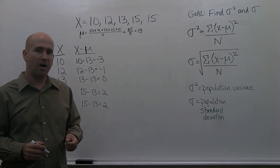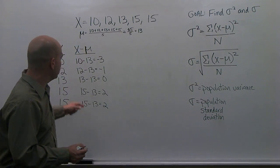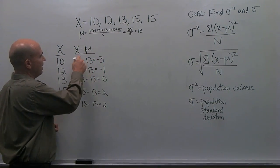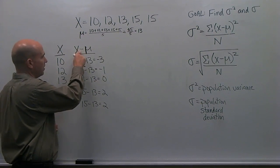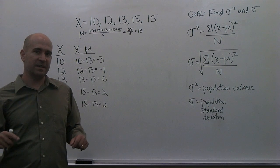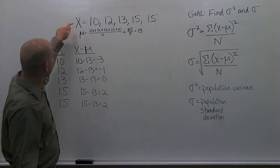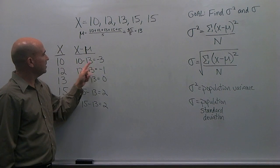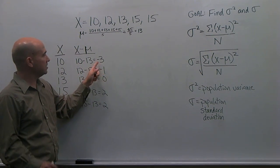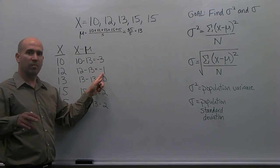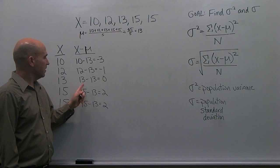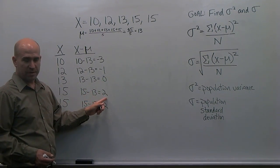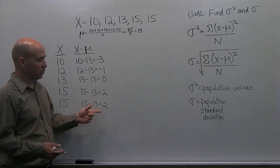Now, one important thing to notice here and to always check on your own when you're doing this is to make sure that the sum of these values, when you add them all up, these are often thought of as deviation scores. How far each value for x deviates or departs from the mean. So, a value of 10 deviates by 3 points below the mean since it's negative. A value of 12 deviates by 1 point below the mean once again because it's negative. 13 does not deviate at all away from the mean. Notice it's the exact same value as the mean. So, this is 0. 15 is 2 points above the mean. 15, once again, is 2 points above the mean.